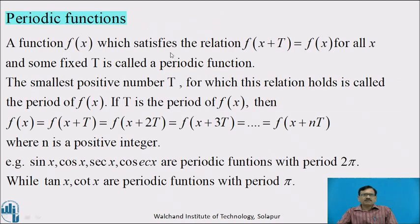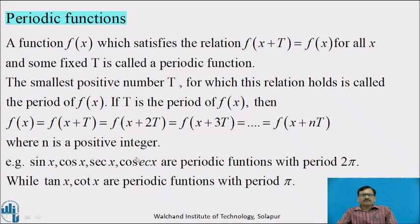Before the Fourier series, we will see about the periodic function. A function f(x) which satisfies the relation f(x+T) = f(x) for all x, and some fixed T, is called a periodic function. The smallest positive number T for which this relation holds is called the period of f(x). If T is the period of f(x), then f(x) = f(x+T) = f(x+2T) and so on, f(x+nT), where n is a positive integer.